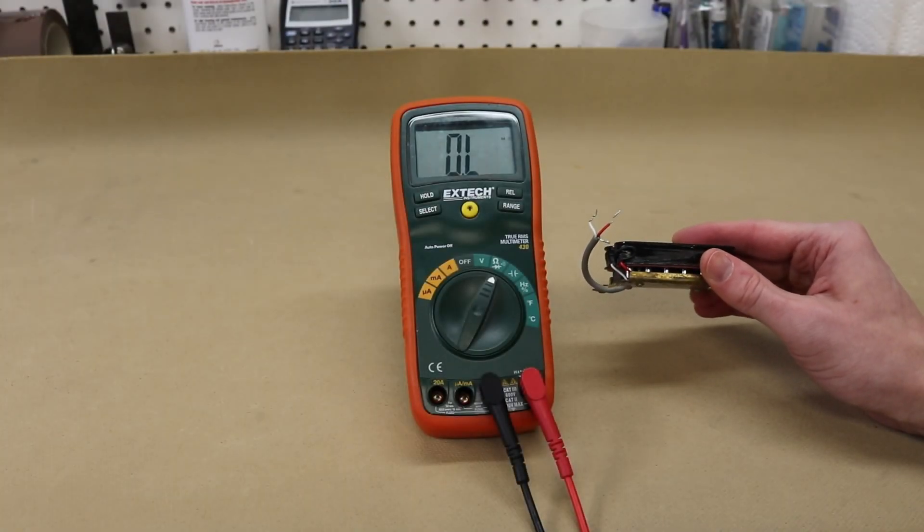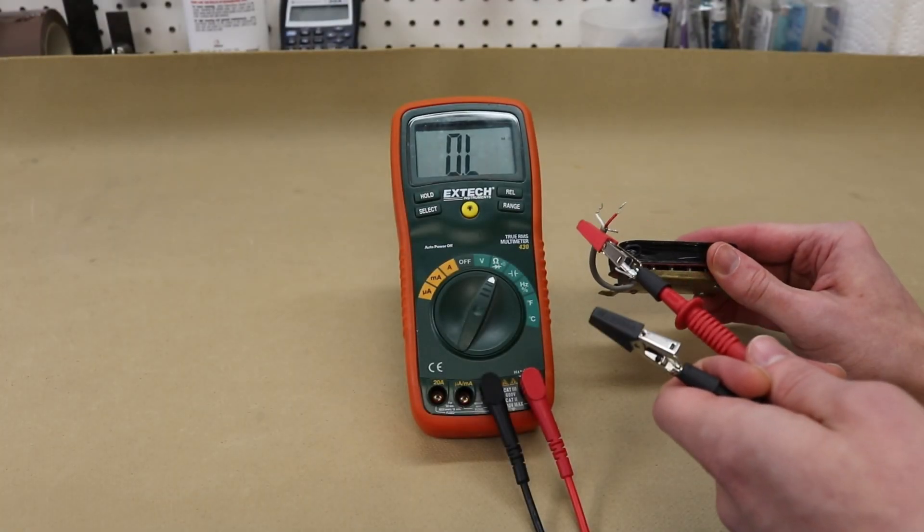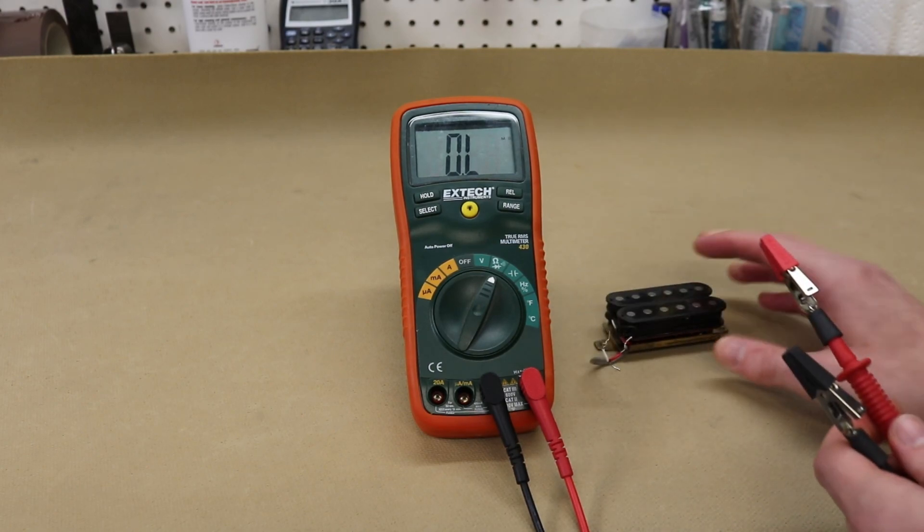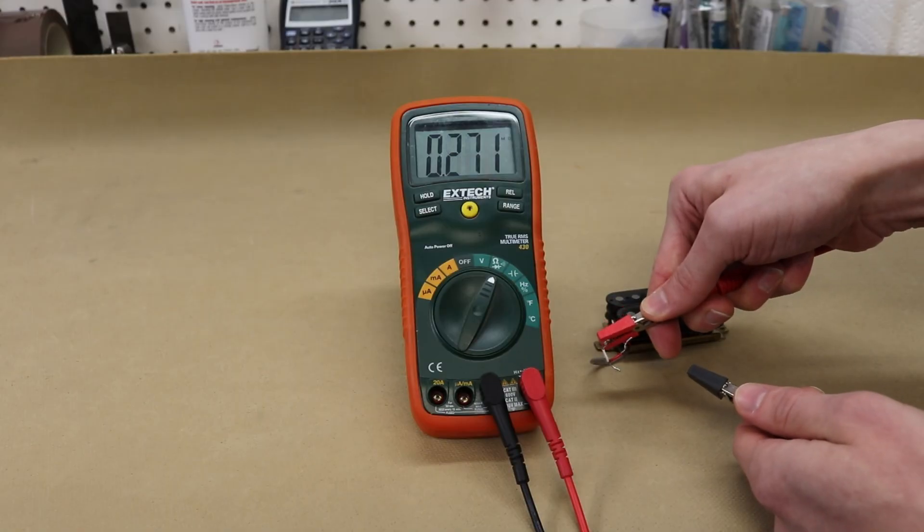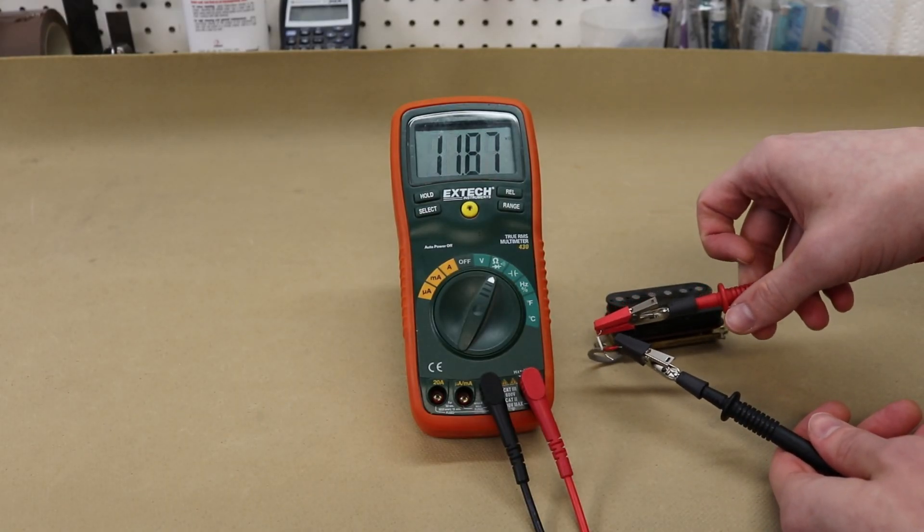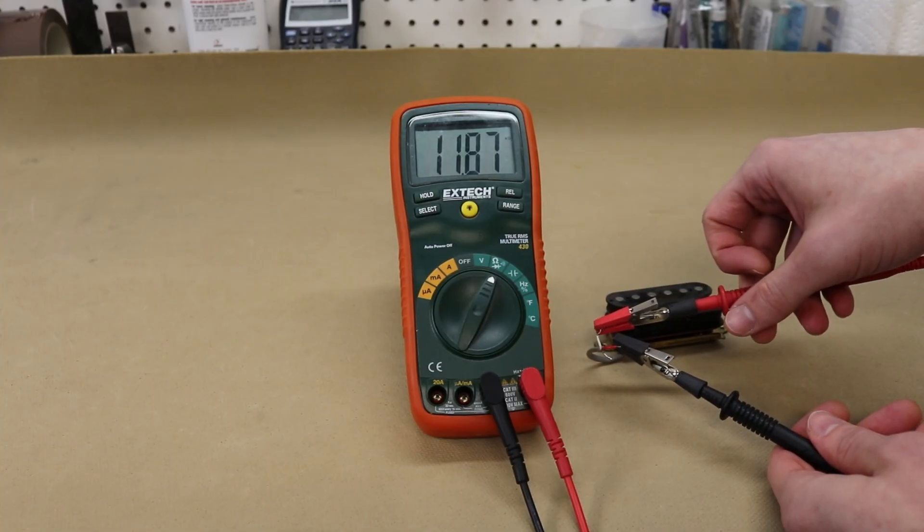Occasionally you'll get a pickup with three wires coming off of it. You have a ground and then a start and a finish. What you do here if you want to measure it is just measure the start and the finish leads, and in this case it's about 11.9k.